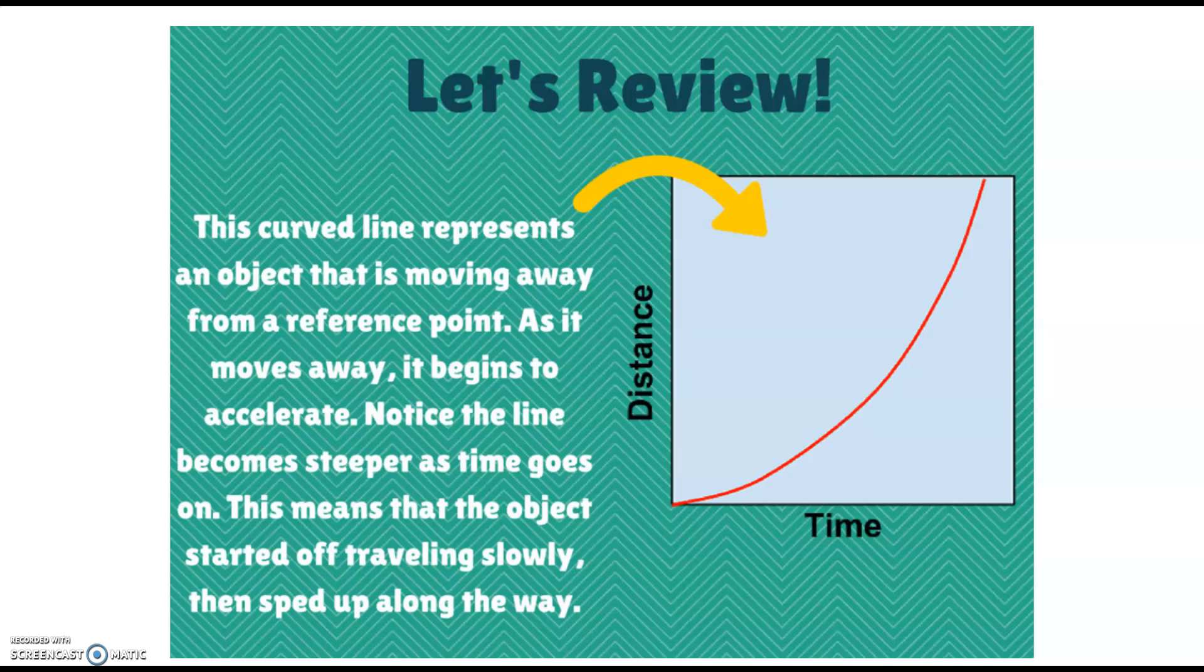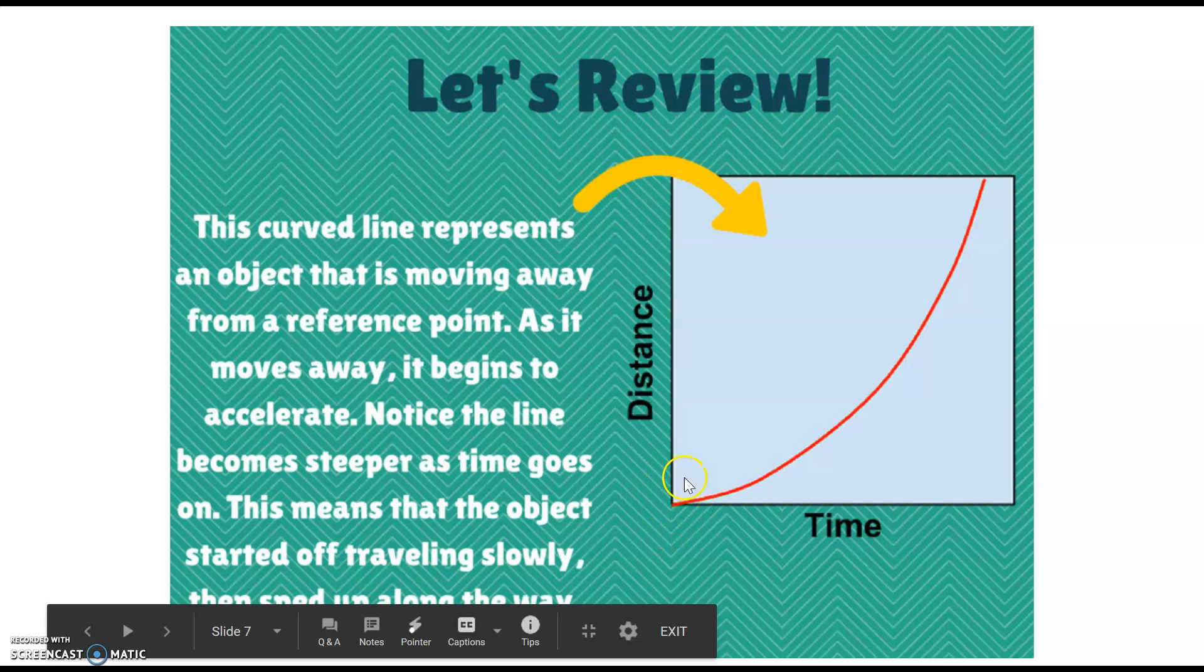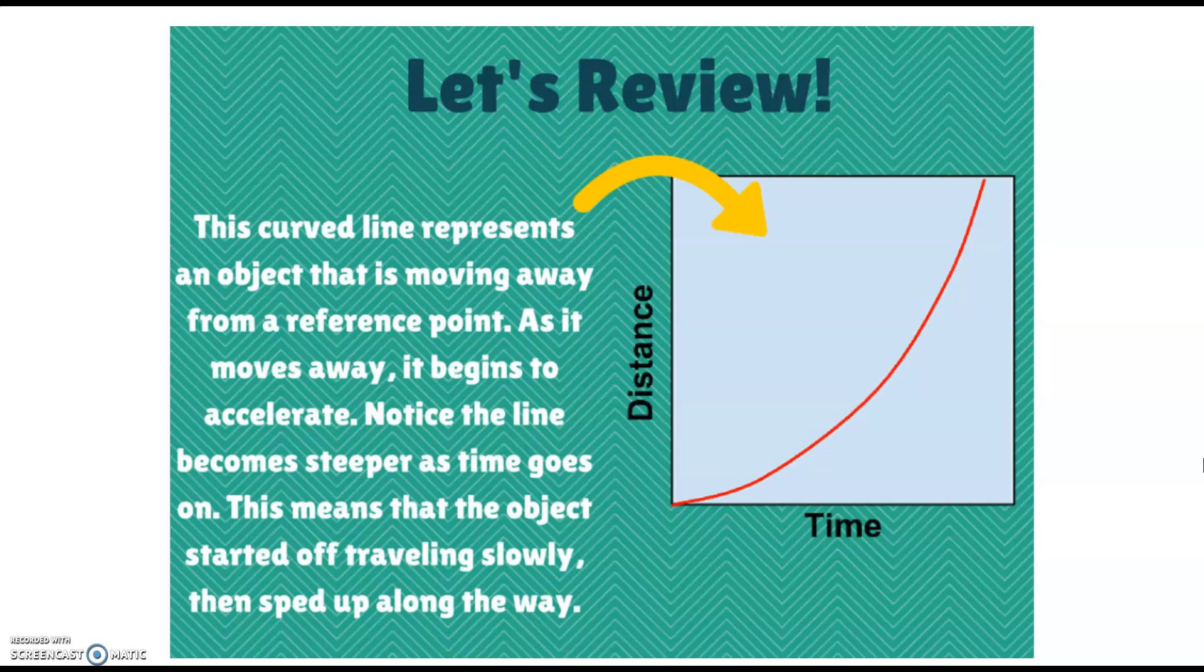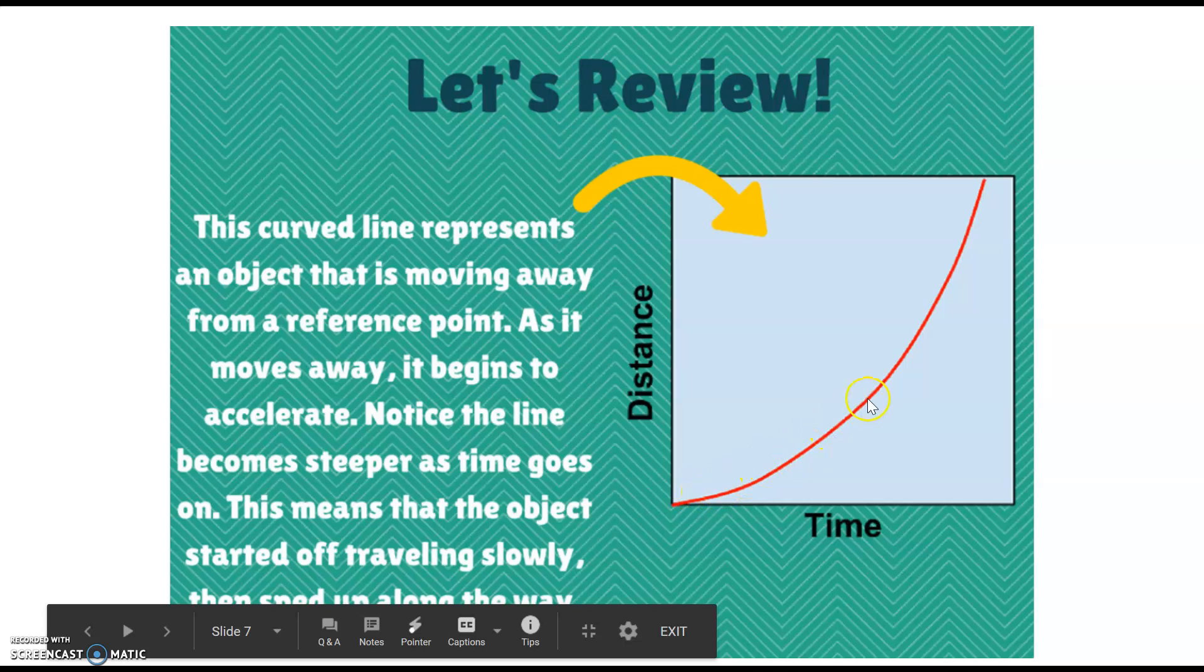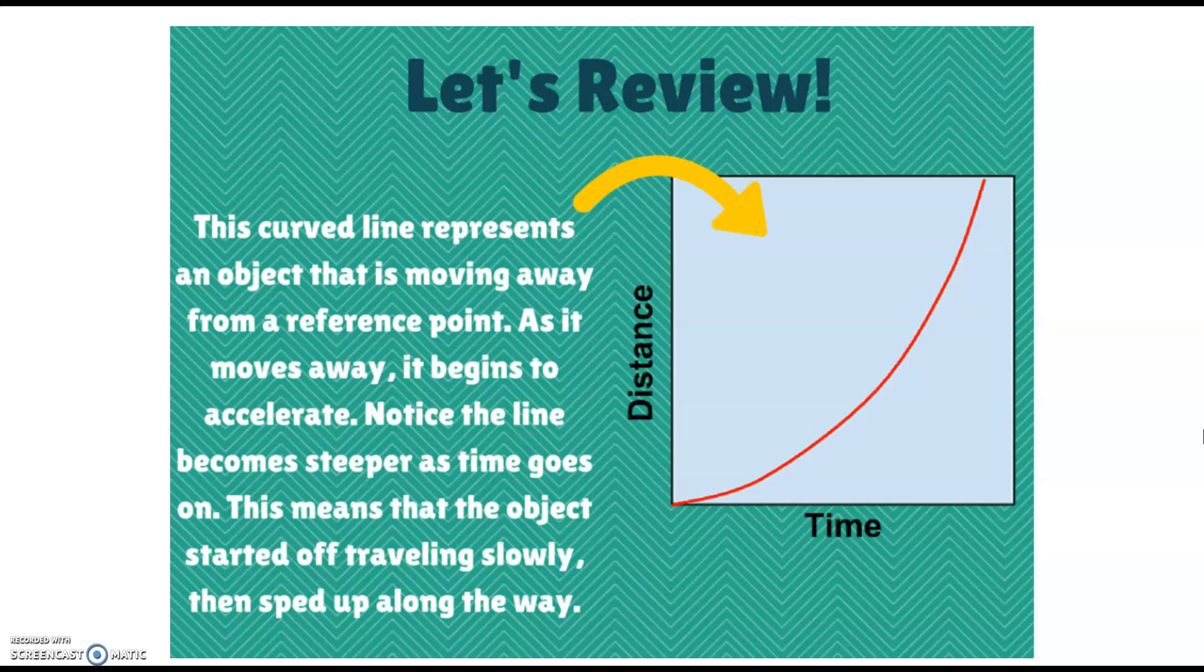This curved line represents an object that is moving away from a reference point and as it moves away it begins to accelerate. We can see that the line is pretty shallow here but it becomes steeper as time goes by. So remember time is going to start at zero and move in this direction. So as time increases our line gets steeper and steeper. What this means is that the object started off traveling slowly and then sped up along the way. So this line is not moving at a constant speed. It is accelerating.